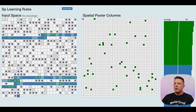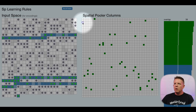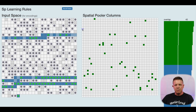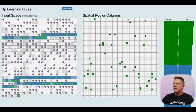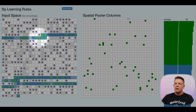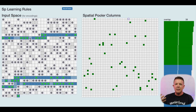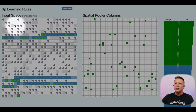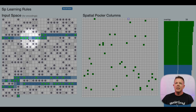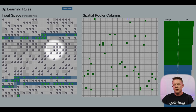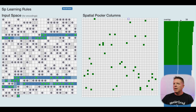We're going to talk about learning rules. Each one of these columns, as I mouse over them, has a relationship to the input space entirely different from the next. They all have random connections to cells in the input space and an overlap score. For example, this column has an overlap score of 38 — that is the number of connected bits. The green circles are connections that fall within the input encoding, and all these gray circles are connections to the input space that are not connected to any on-bits in the encoding itself.